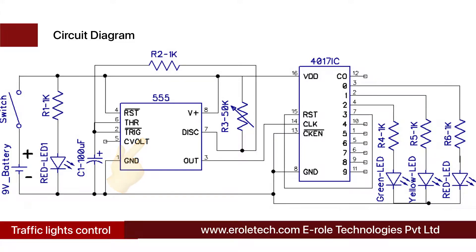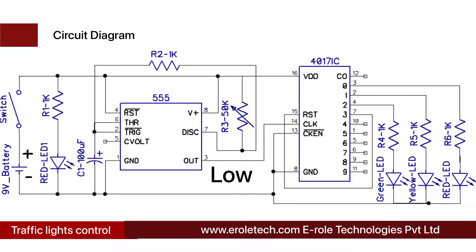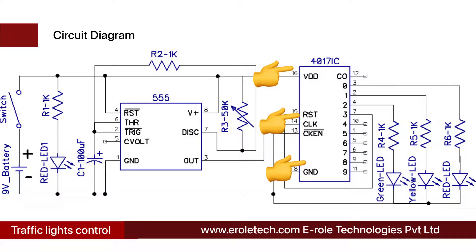The 555 timer IC can work in three different modes: monostable, astable, and bistable mode. In this project, we are using it in astable mode, so at the output of the 555 timer IC we will get continuous high and low pulses. The CD4017 decade counter IC has 16 pins — 10 output pins, one clock pin, supply, ground, and reset pin. The clock pin is connected with the output pin of the 555 timer IC.